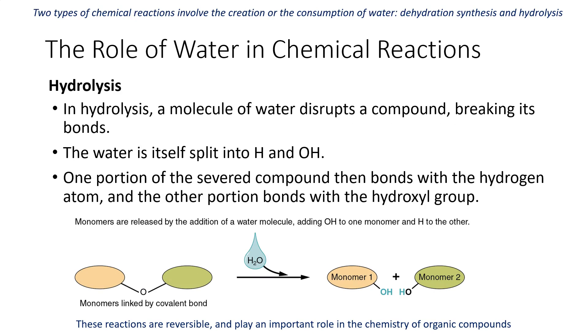Another type of reaction is hydrolysis. Here a molecule of water will disrupt a compound, breaking its bond, and the water is then split into the hydrogen and hydroxyl group. So you can see we have a covalent bond with these two reactants. Water comes in and breaks up that bond, and in that process the water is broken into that hydroxyl group and a hydrogen. These dehydration synthesis and hydrolysis reactions are reversible and they're an important part of the chemistry of organic compounds.